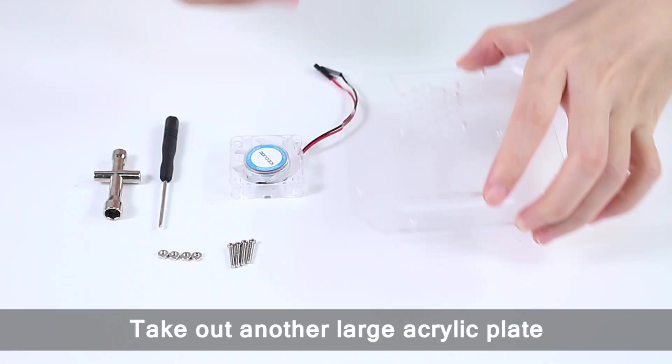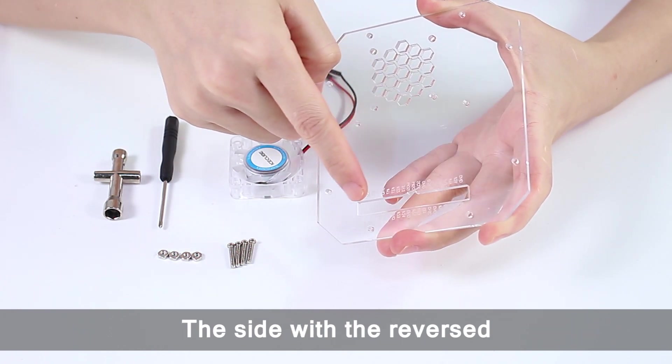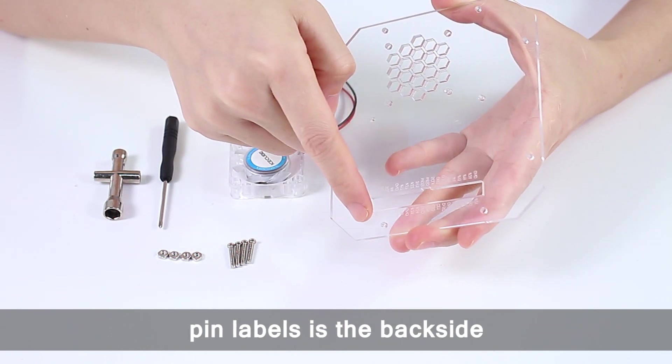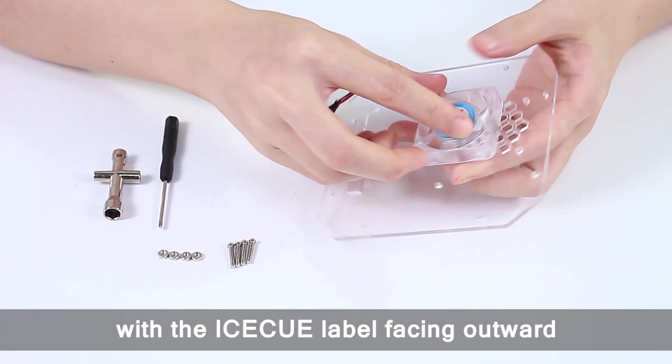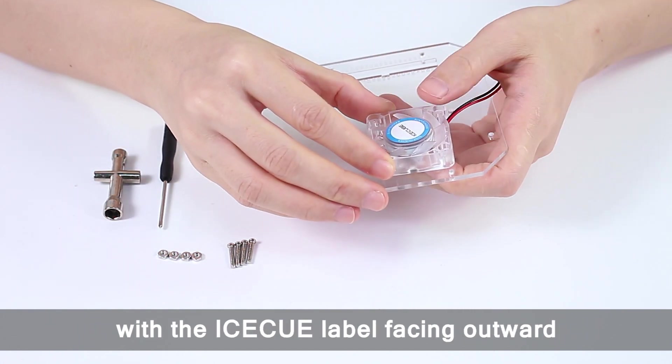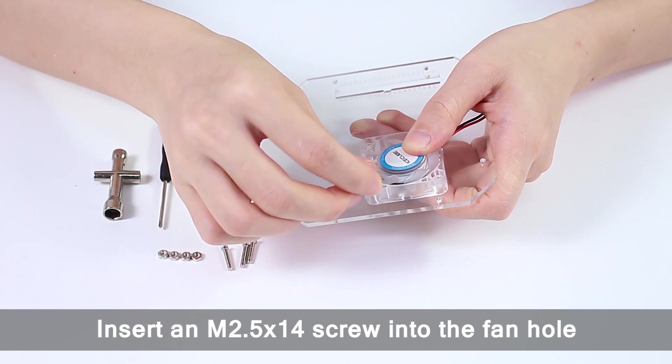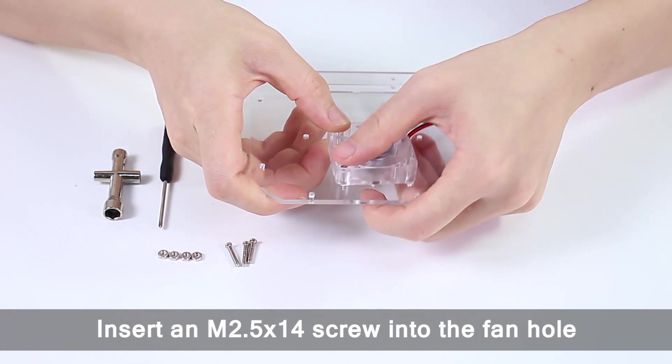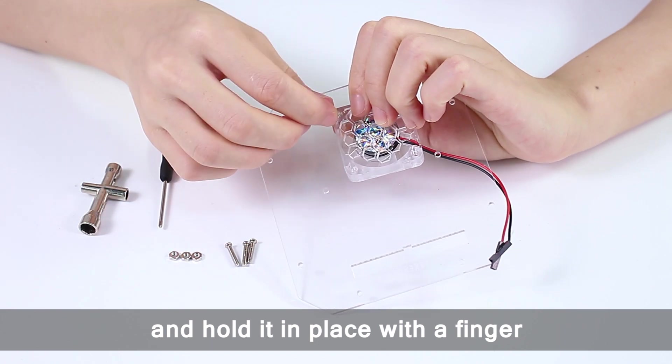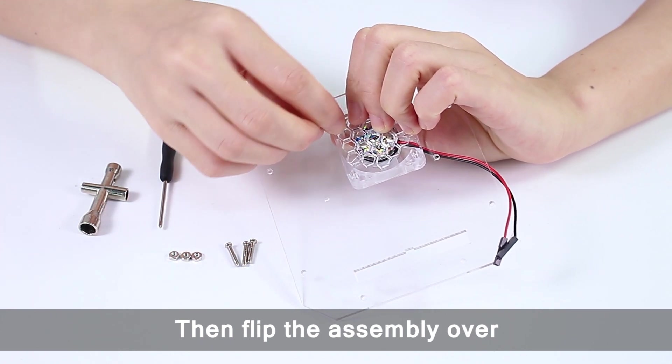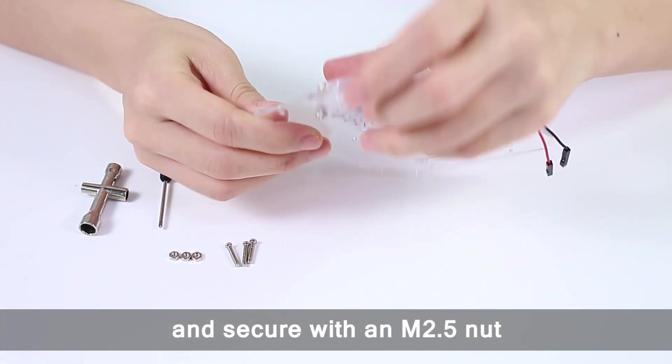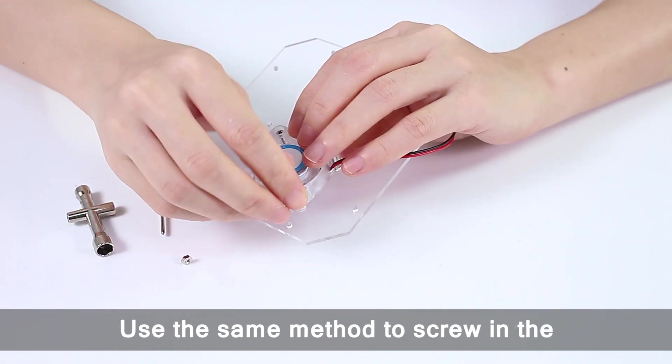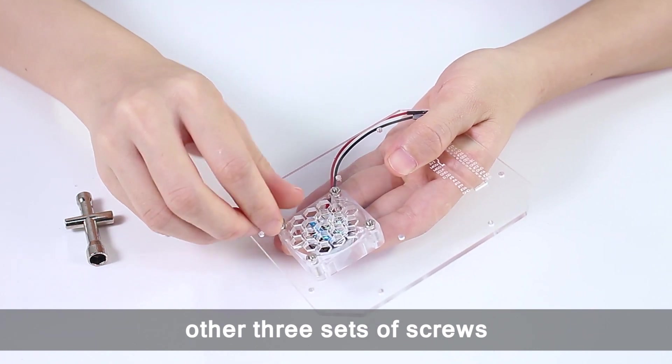Take out another large acrylic plate. The side with the reversed pin labels is the back side. We need to attach the fan to this side, with the ISECU label facing outward. Insert an M2.5 by 14 screw into the fan hole, and hold it in place with a finger. Then flip the assembly over and secure with an M2.5 by 12 nut. Use the same method to screw in the other three sets of screws.